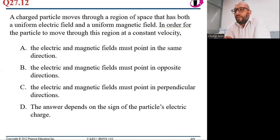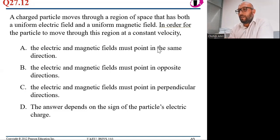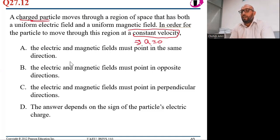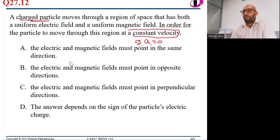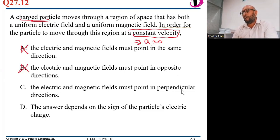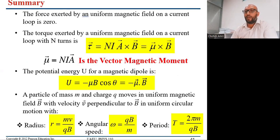Final question: A charged particle moves through a region with both uniform electric and magnetic fields at constant speed. Constant speed means zero acceleration, so the net force is zero. The magnetic field does no work on a charged particle. For constant speed, the electric and magnetic forces must cancel. Since the magnetic force is always perpendicular to v, and the electric force is along E, they must be perpendicular to each other for cancellation — so E and B must be perpendicular. The answer is C: the electric field and magnetic field must be in perpendicular directions.